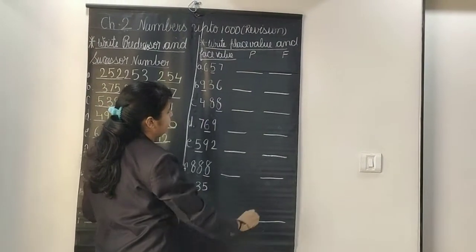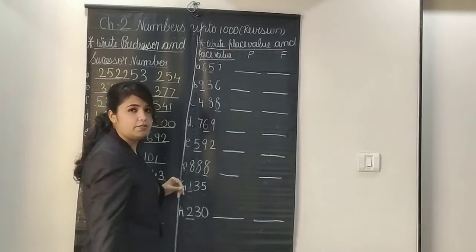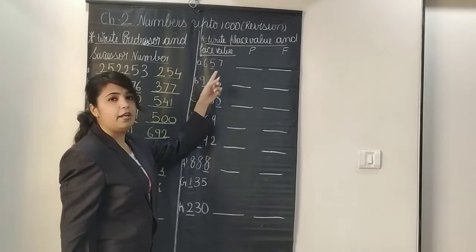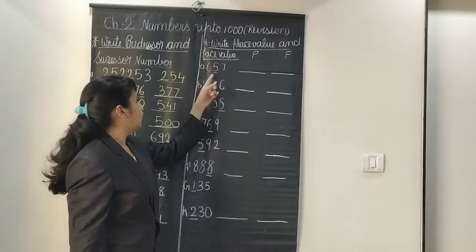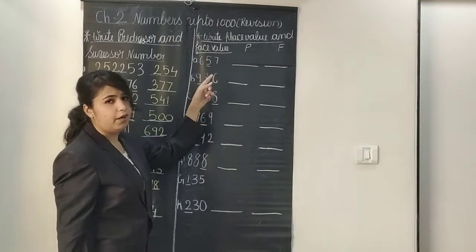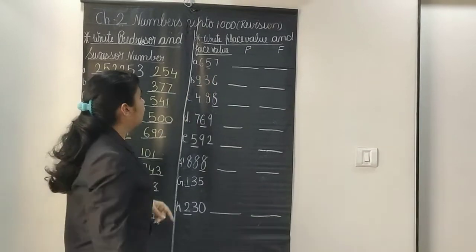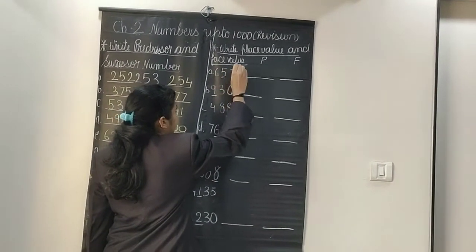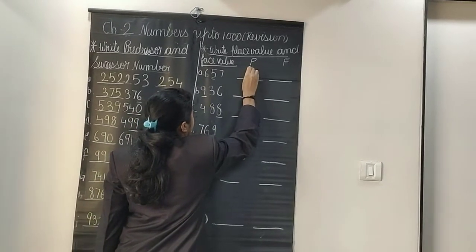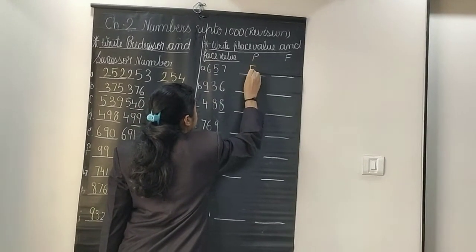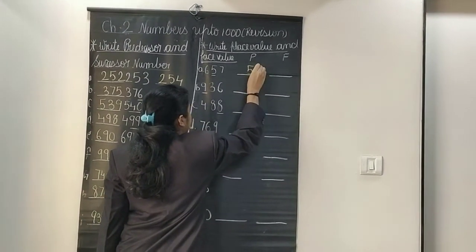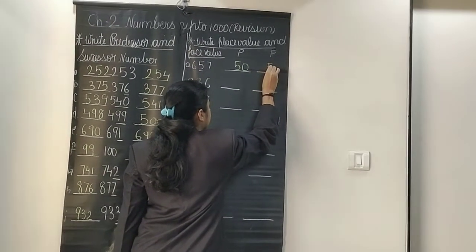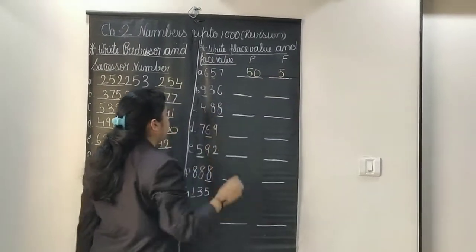This is the column for place value and this is the column for face value. First is 657 — they have asked about the digit 5. The place value is 50, so I will write 50 as the place value, and the face value remains the same, which is 5.